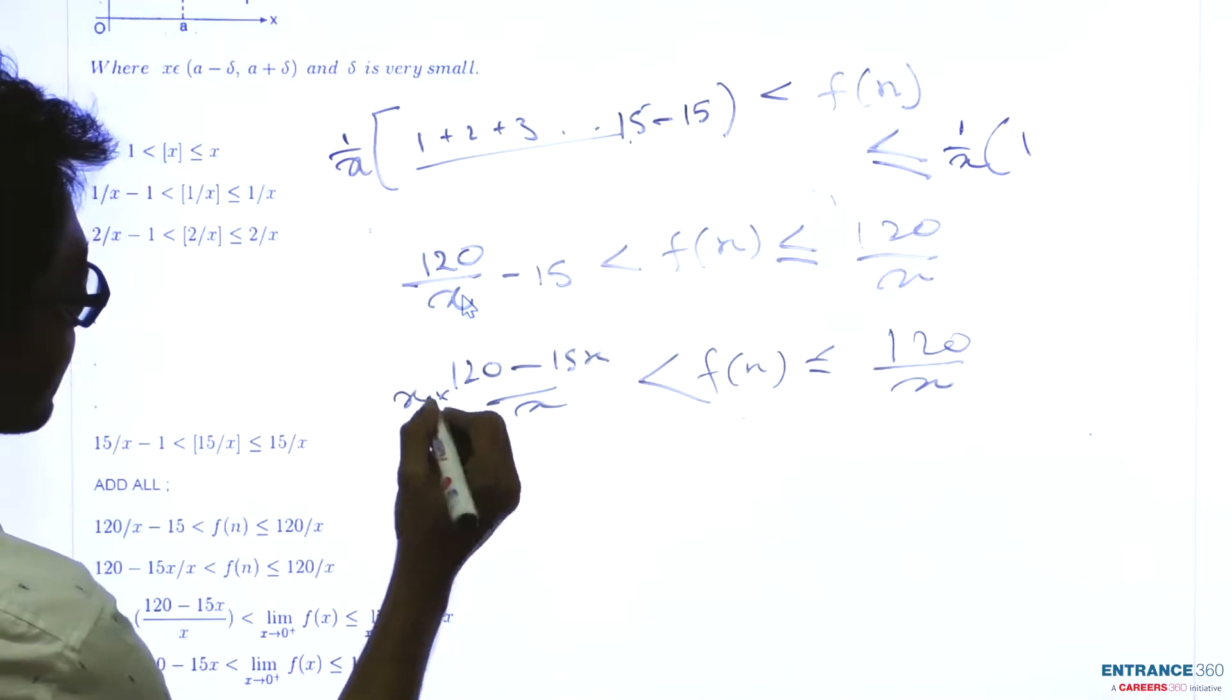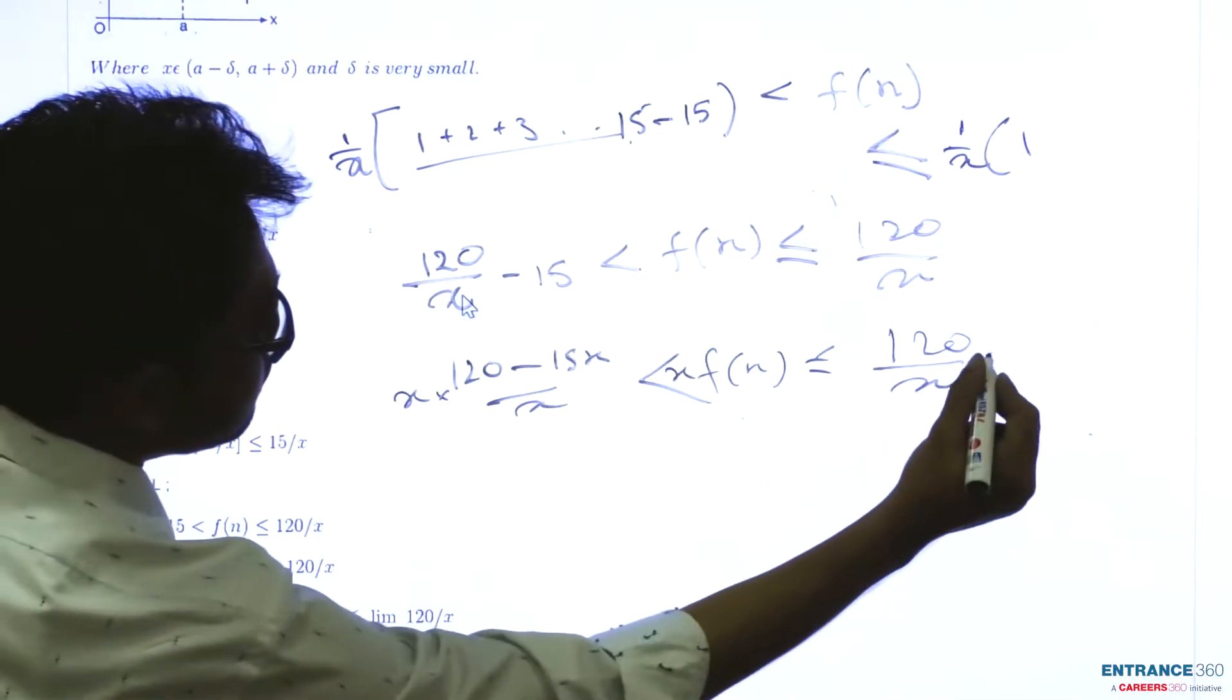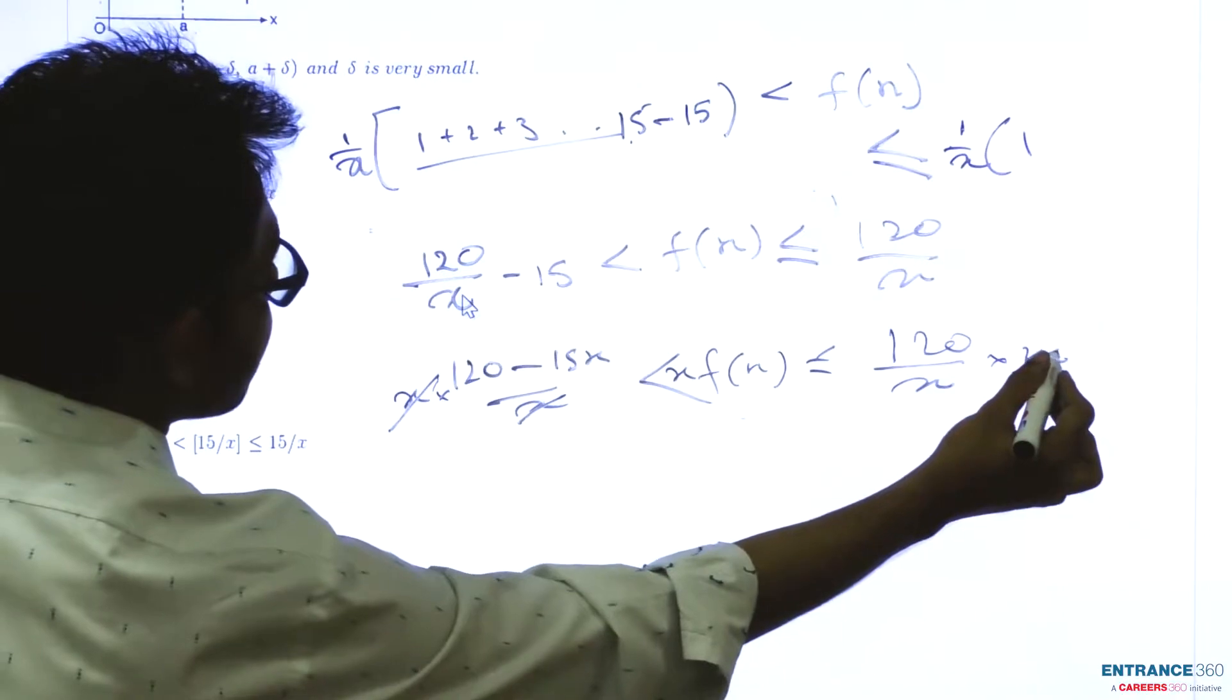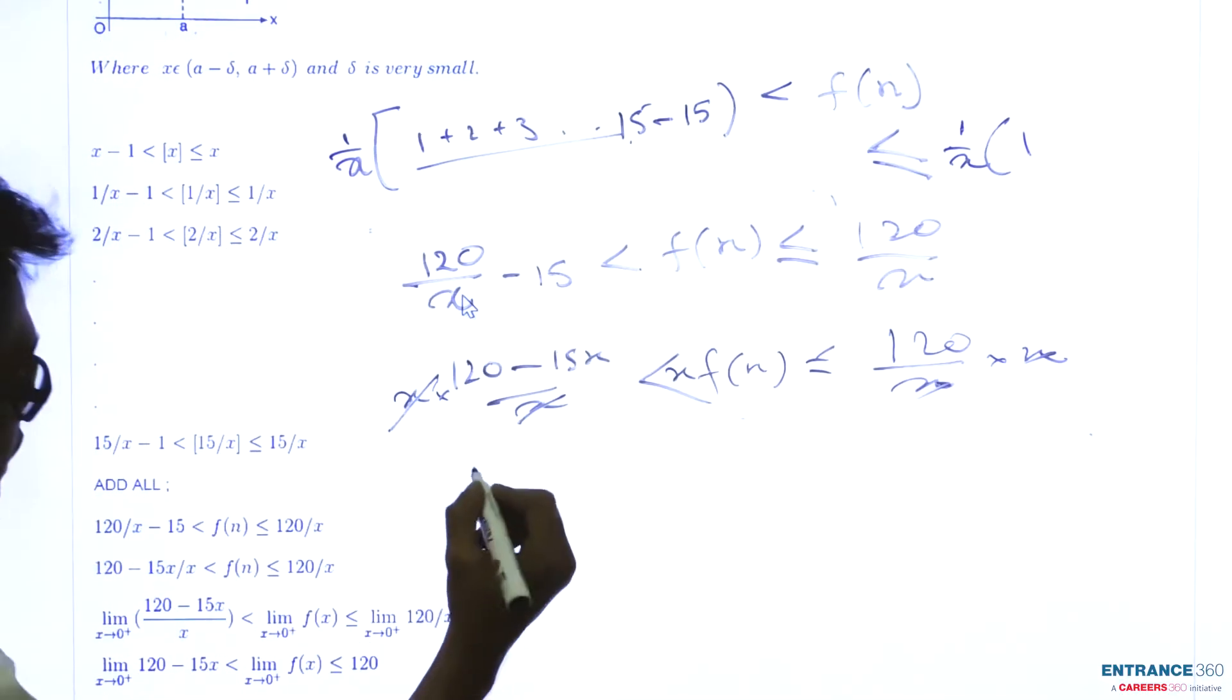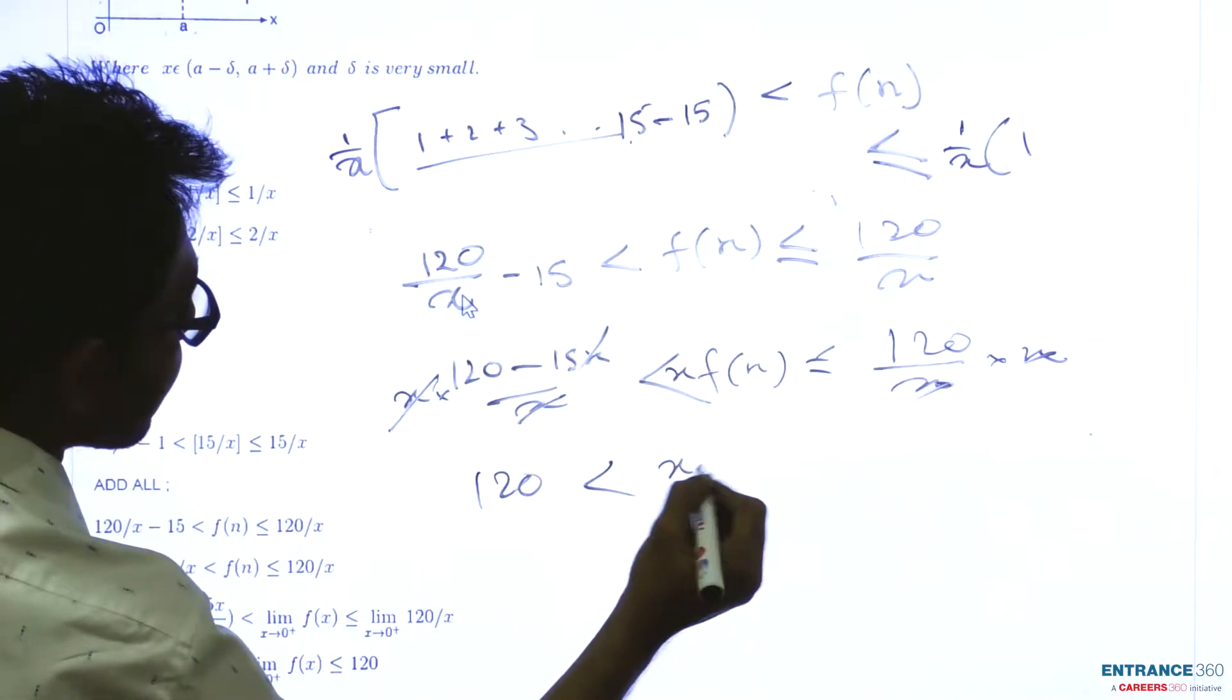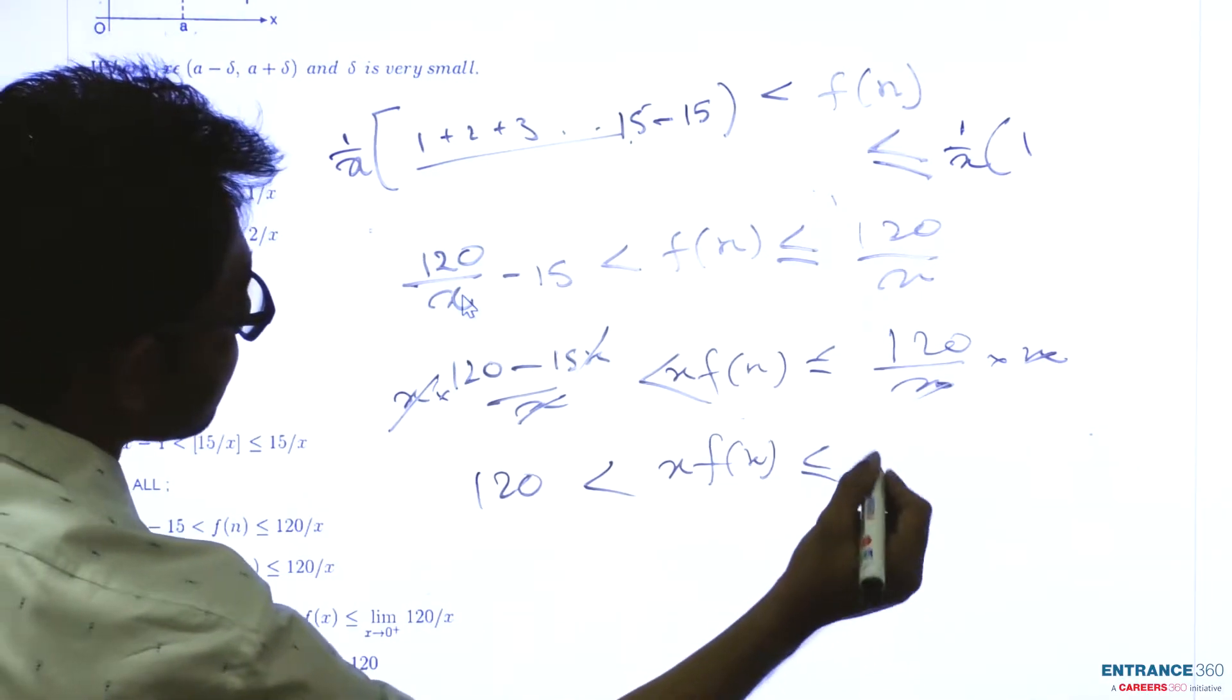Now, multiply with x. This x will cancel out and this x will cancel out. As x tends to 0, this will become 0, and x·f(x) will be 120.